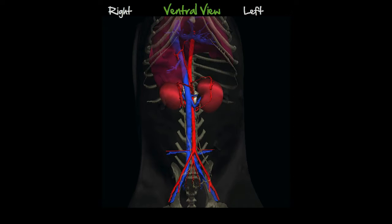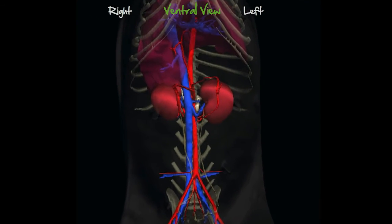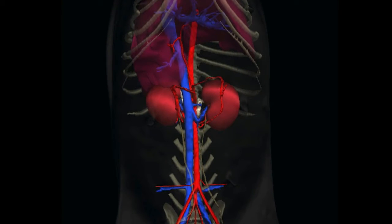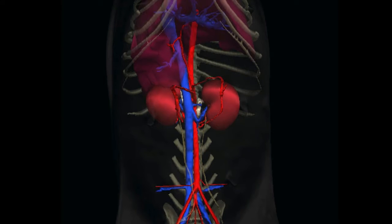As their name indicates, the adrenal glands are located close to the kidneys in the dorsal retroperitoneal space. The left adrenal is medial and dorsal to the left kidney, edging on the lateral side of the aorta, just cranial to the left renal vein. Ventrally, the left phrenicoabdominal vein divides the gland into the cranial and caudal lobes.